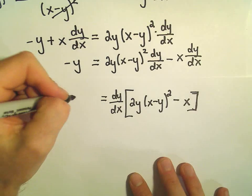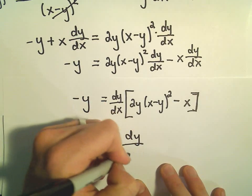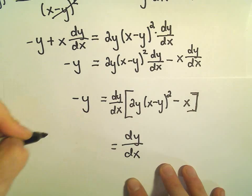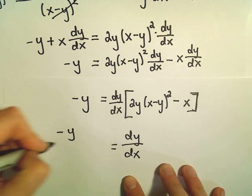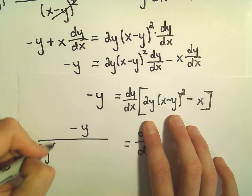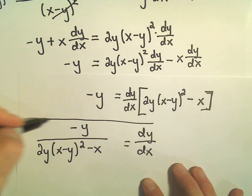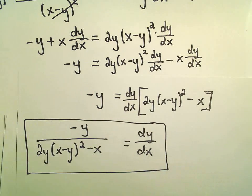On the right side, we're left with negative y. So to solve for dy dx, we just divide. So our derivative will be negative y over all of this stuff: 2y times x minus y squared minus x. And now we have our derivative.